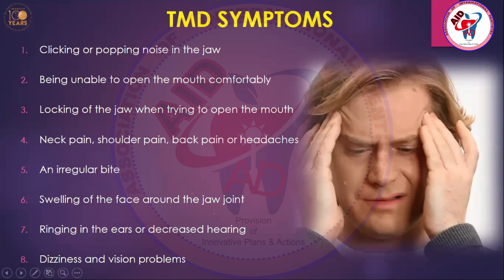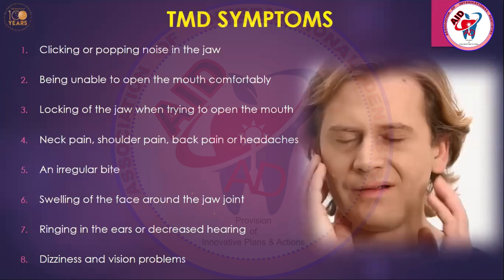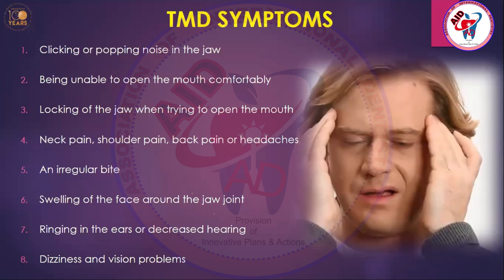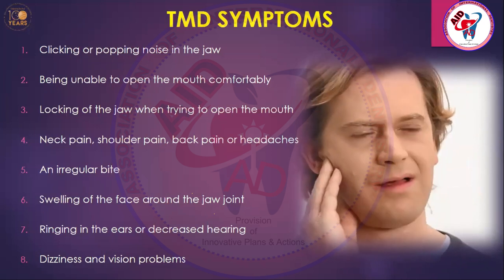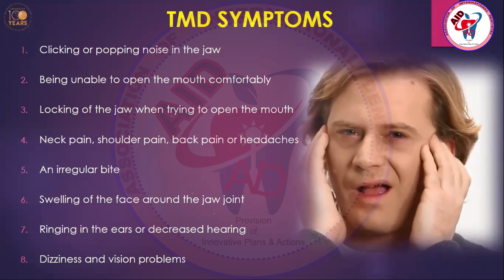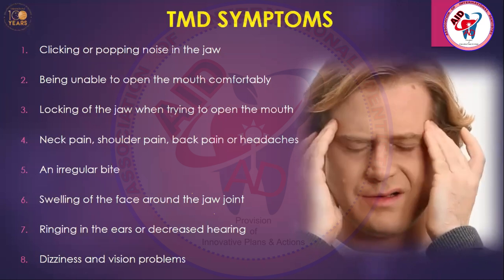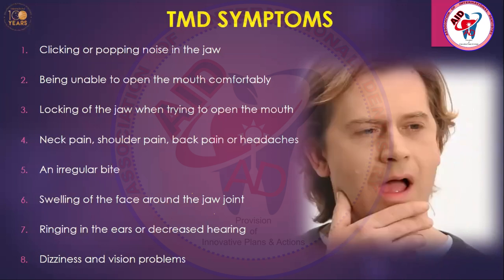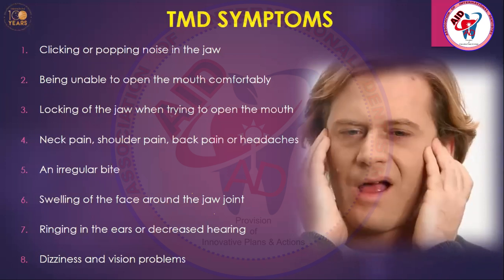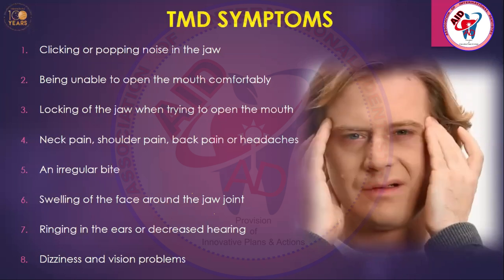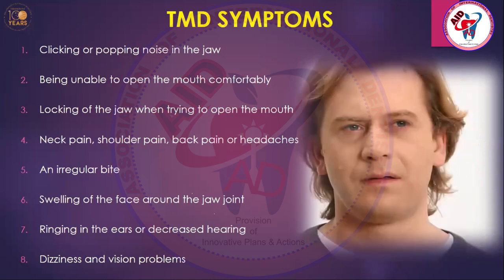Neck pain, shoulder pain, back pain, and headache are all related to the stresses given to those areas by the nerves and attached musculature. The patient has an irregular bite — maneuvering in a very irregular way. Swelling of the face around the jaw joint occurs when there is any organic disease such as inflammation or infection. Patients sometimes give pressure and maneuver the joint themselves, and the stresses from the fingers also result in inflammatory episodes in the joint.